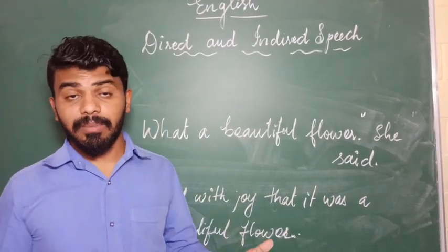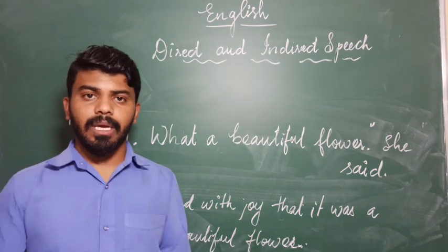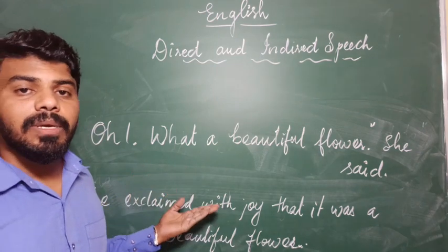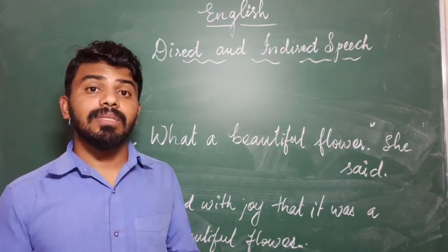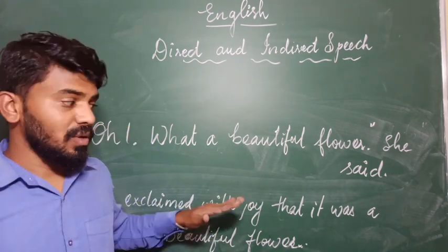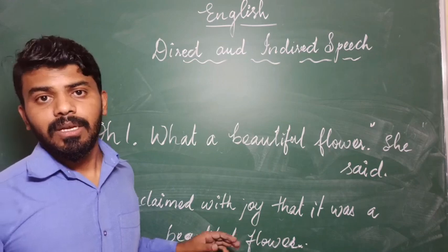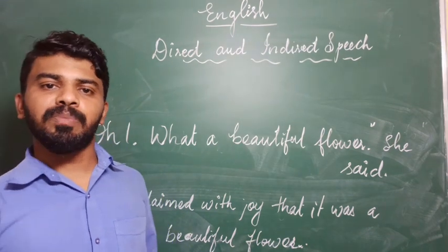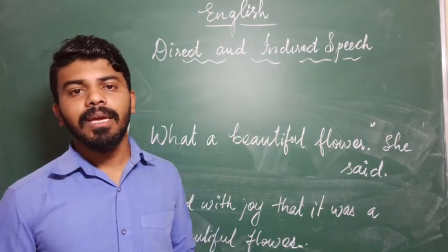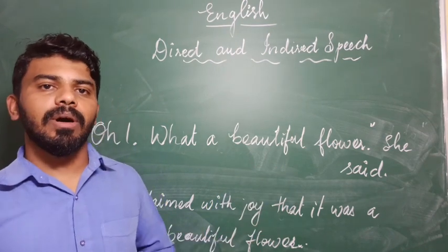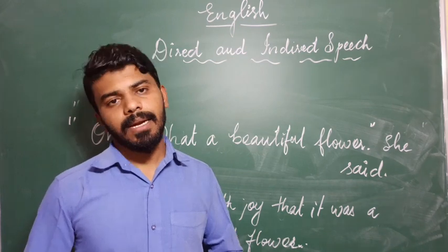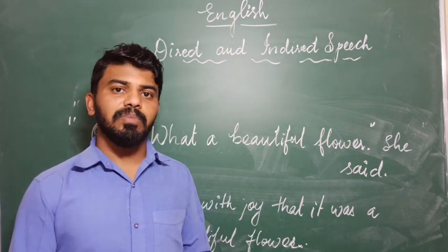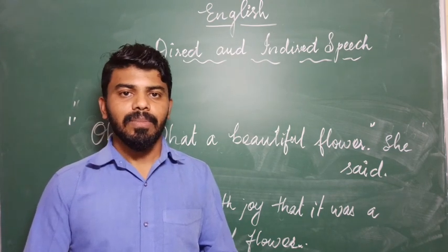Whenever we have an exclamatory sentence, there are words like hooray, alas, bravo. When we have these in direct speech, we will not use them in indirect speech. We will use only the sense of the word, not the word itself. This is all about direct and indirect speech. If you have any doubts, please comment in the comment box and I will answer. If there is any mistake in the spellings or while teaching, please let me know so I can correct it in the next video. Thank you very much for your wonderful support. Please like, share, and subscribe.